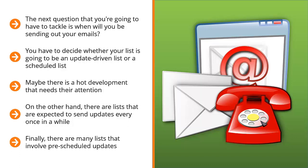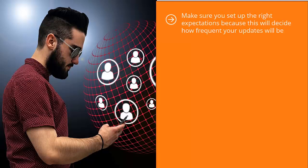Finally, there are many lists that involve pre-scheduled updates. These are usually tutorials or autoresponder series that people specifically sign up for. For example, if I sign up for an email list promising to teach me how to trade bitcoin on a weekly basis, I would expect to receive a tutorial email with links to instructional videos once a week. Make sure you set up the right expectations, because this will decide how frequent your updates will be.